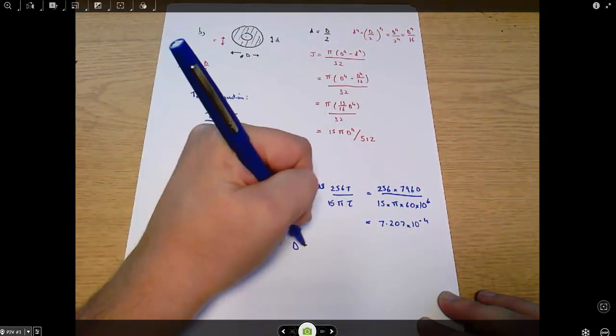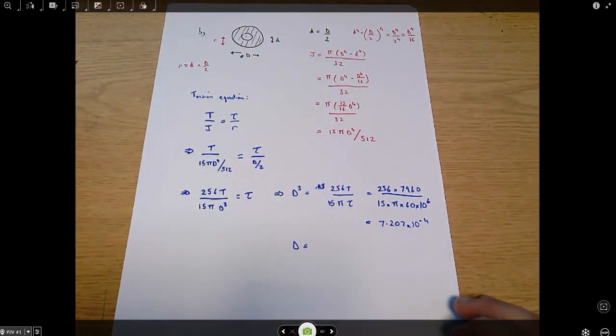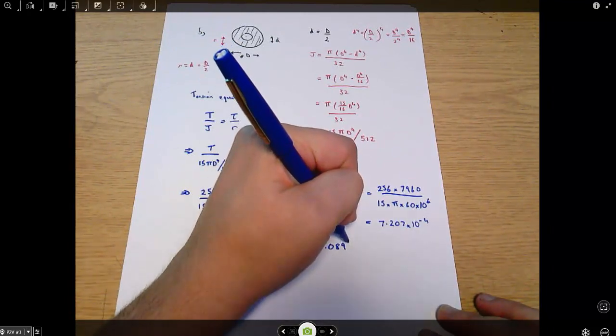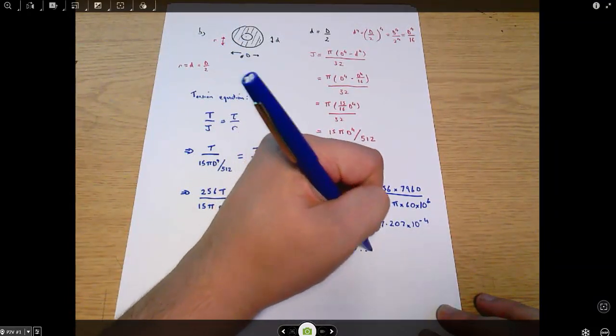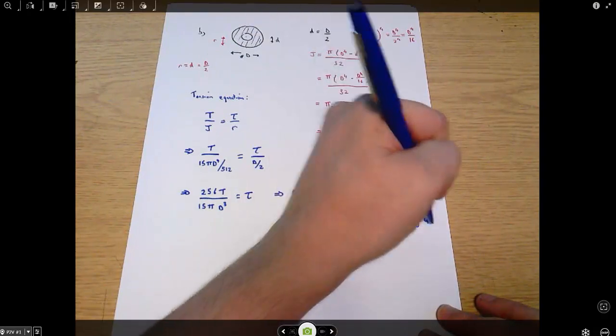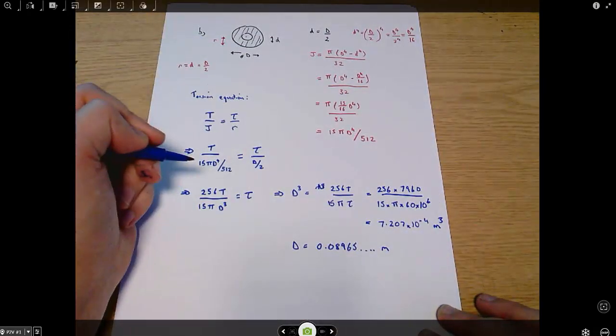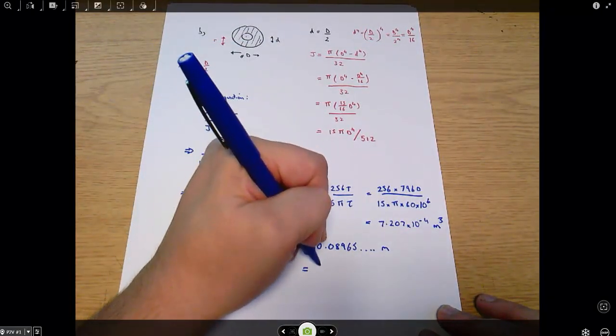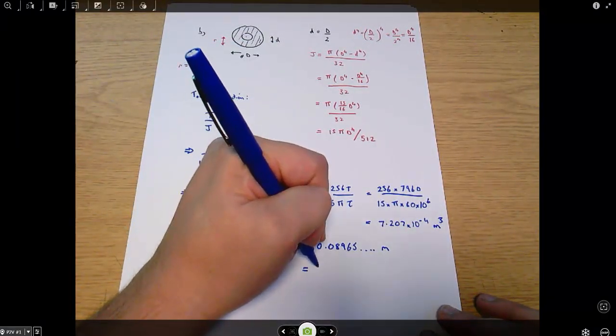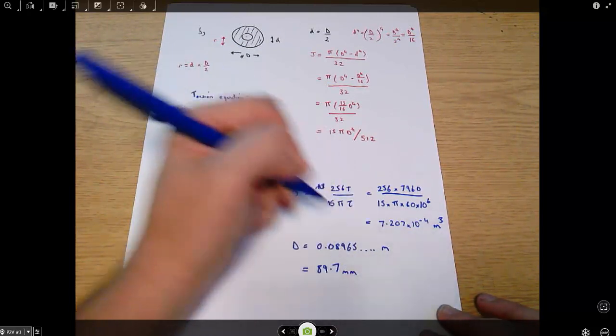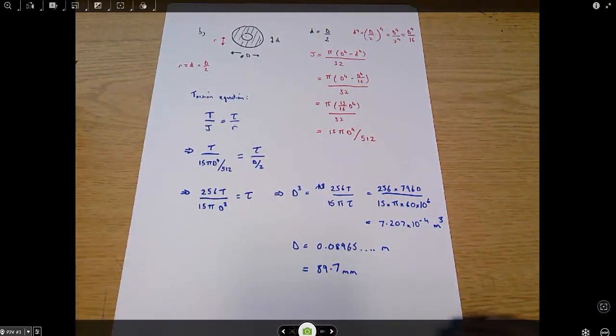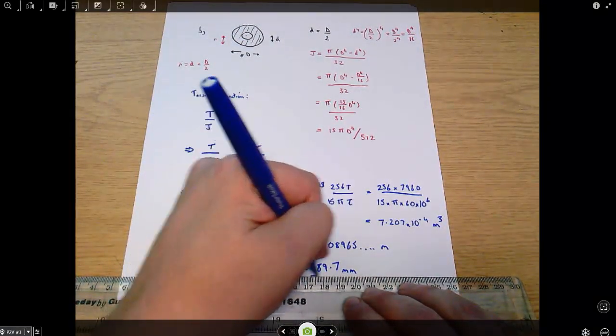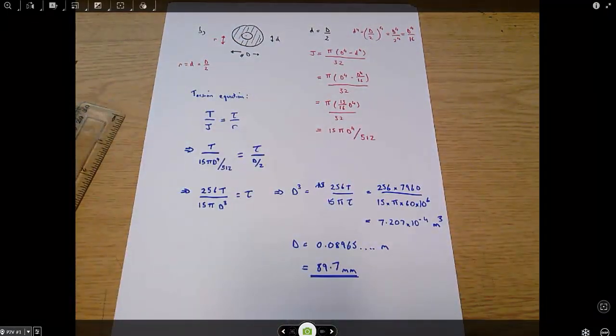Which comes out as 7.207 times 10 to the minus 4. That means that capital D equals - again make sure you know where your cube root button is - 0.08965 metres. That answer there was in cubic metres by the way, because it was D cubed. Which is about, well I'll call that 89.7 millimetres to 3 decimal places.